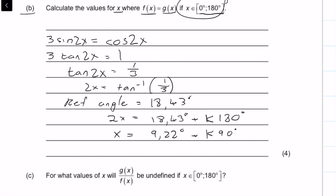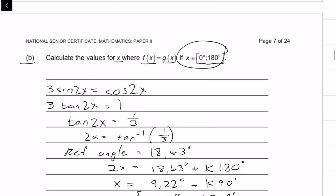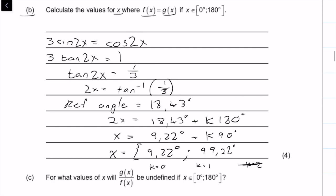Now I've got my answers. So x is equal to 9.22 degrees plus, I let k equals, so that was for k equals 0. Then I let k equals 1 and I get 99.22 degrees. Then if I let k equals 2, then we are above 180, so we stop at that point, and that is our solution.